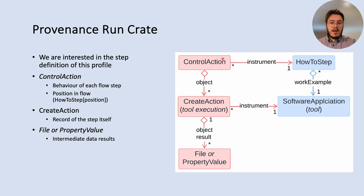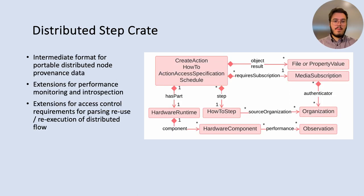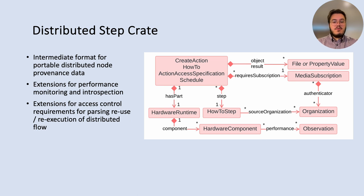Each step has a control action entity, which describes the behavior of the step — for example scattering in CWL or some other parallel behavior. The create action entity describes the actual execution of the tool associated with that step, and references a predefined tool in the prospective graph. Finally, the tool that generates some outputs during its execution is represented by the file or property value entity. Given this step definition, we make some modifications for the distributed context.